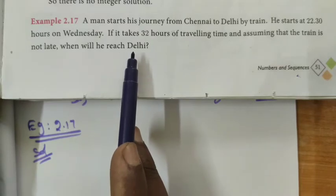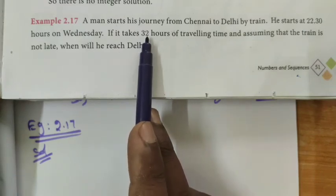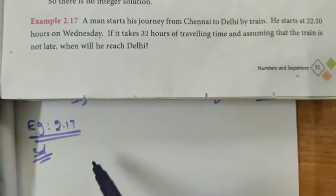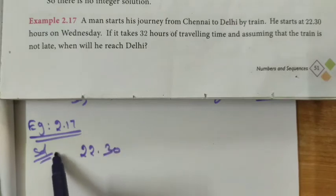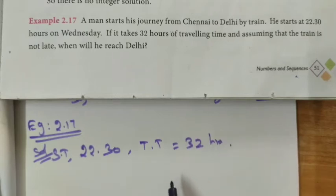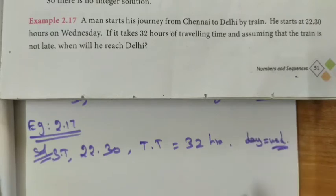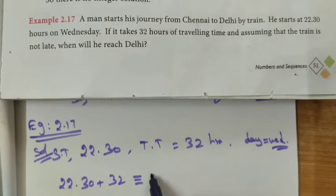We have to find the time and day within the 32 hours. After 24 hours one complete day is done, with remaining hours. The starting time is 22:30, and the traveling time is 32 hours. So we take 22:30 plus the traveling time 32 hours, which is congruent to some remainder mod 24.